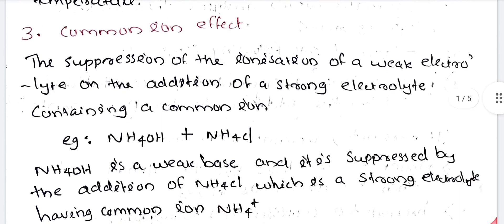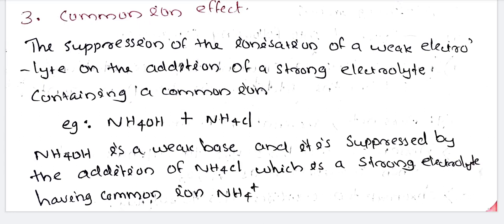What is the common ion effect? The suppression of ionization of a weak electrolyte on the addition of a strong electrolyte containing a common ion. For example, NH4OH and NH4Cl. NH4OH is a weak base and it is suppressed by the addition of NH4Cl, which is a strong electrolyte having the common ion NH4+.